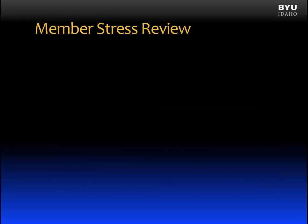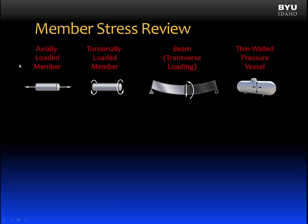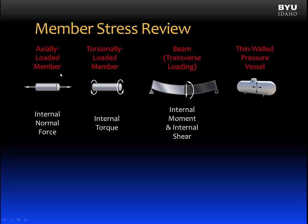Let's begin by reviewing member loading conditions and their associated stresses. The loading conditions we've considered so far in this course are axially loaded members, torsionally loaded members, beam members, and thin-walled pressure vessels. The internal resultant load of an axially loaded member is an internal normal force. For a torsionally loaded member, the internal resultant force is an internal torque. And for a beam member, the internal resultant loads are both internal moments and internal shears.